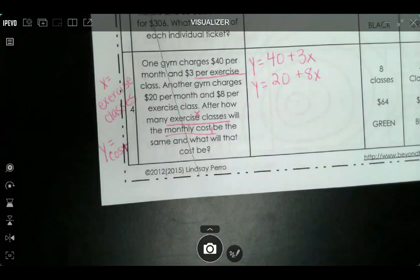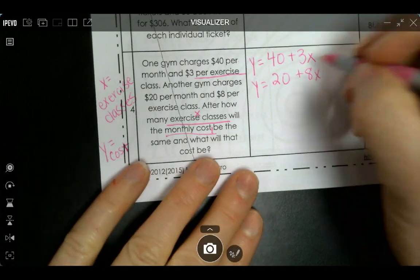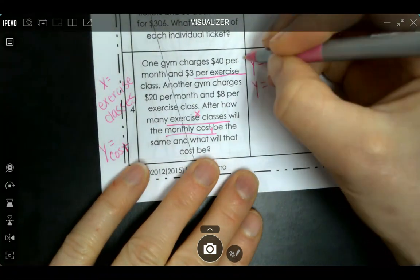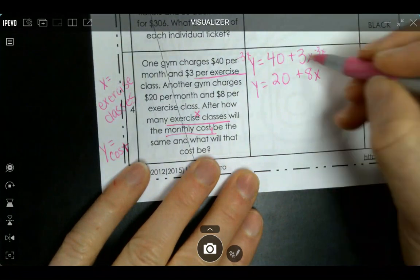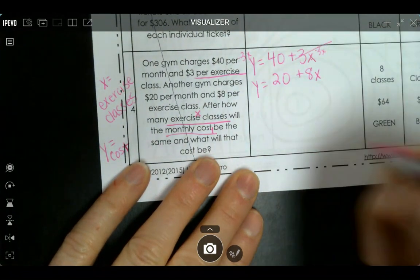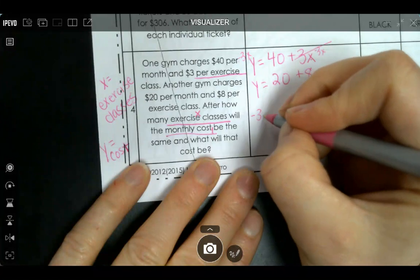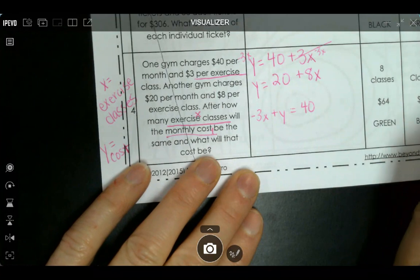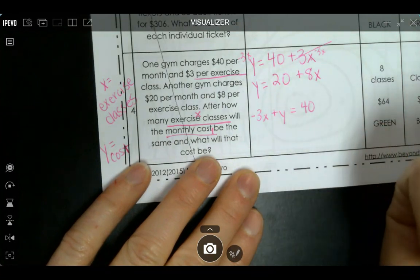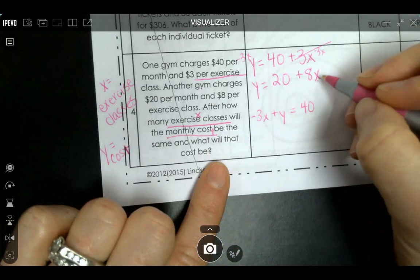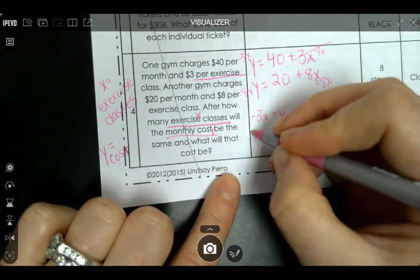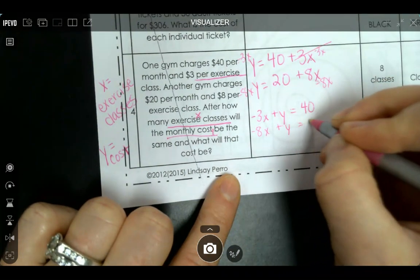These are written in y equals form, but we can rearrange them when we put them in the matrix form. We want ax plus by equals c, so I'm going to move this to the other side by subtracting it. So minus 3x on this side, minus 3x on this side. So whenever you do that, it's now -3x + y = 40. We want it in the ax plus by equals c form so we can use the matrix. We'll do the same thing to the second equation. When you move the 8x to the other side, we do the opposite, minus 8x. So -8x + y = 20.